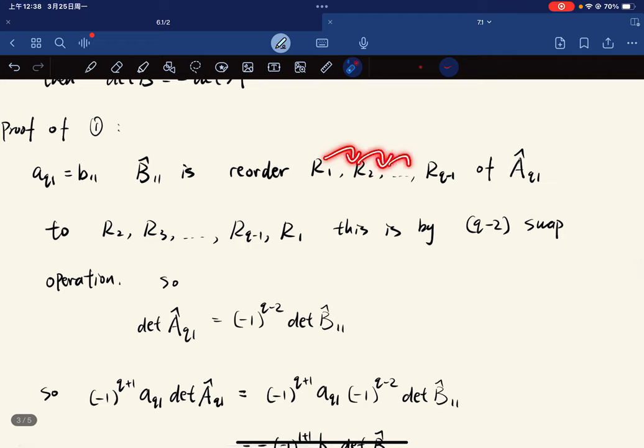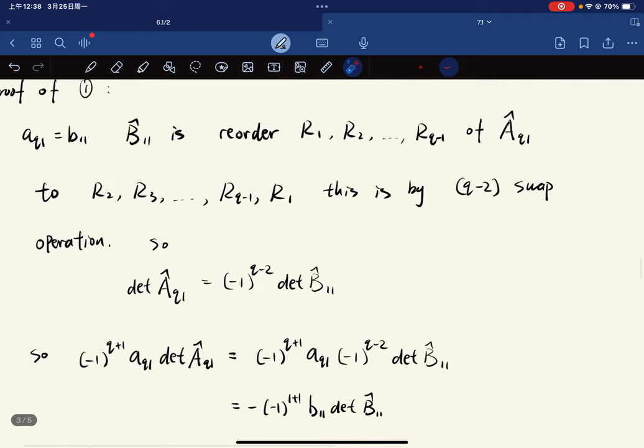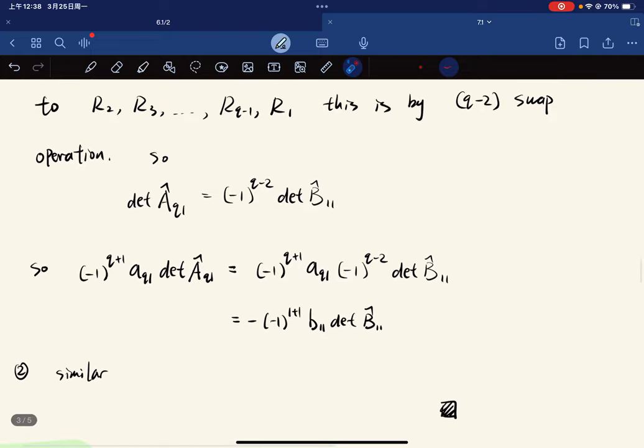To prove one, we know that this is true. And b hat one one is reorder from q one to this. So we put r one to here. All of them shifted forward. We move r one to here. This is by q minus two swap operations. We swap this. And we swap, swap, swap. So r one goes to here. So it's q minus two swaps. You just picture it. So we're good.